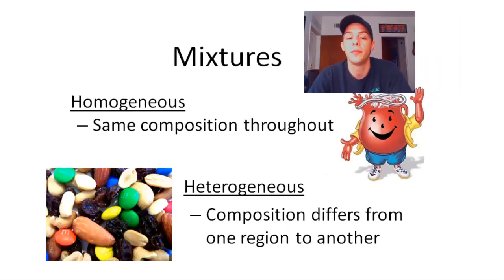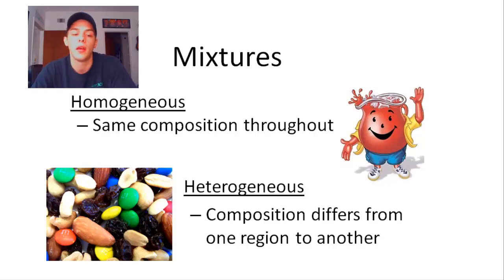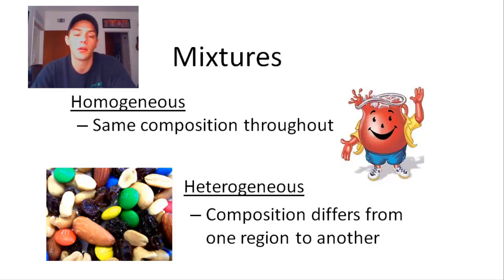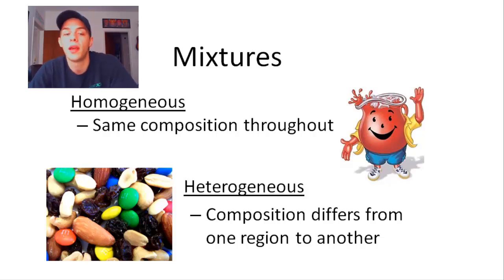Let's move on to mixtures. As I said, we have homogeneous and heterogeneous mixtures. In a homogeneous mixture, the composition is the same throughout. If you were to take a glass of Kool-Aid and analyze two separate parts of it, you would find that those two parts have identical compositions. Therefore, Kool-Aid is considered to be a homogeneous mixture.